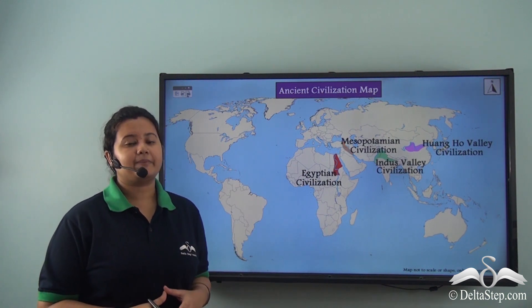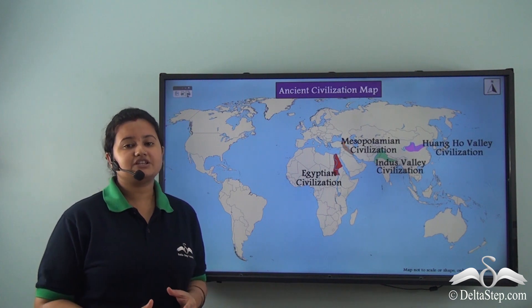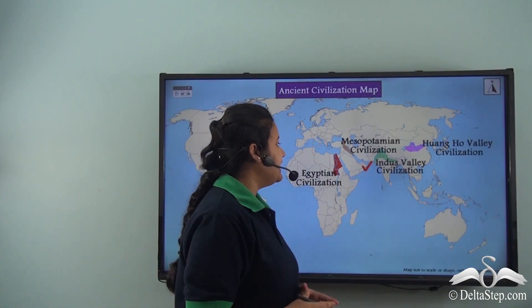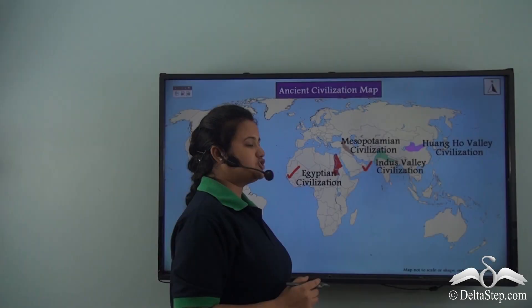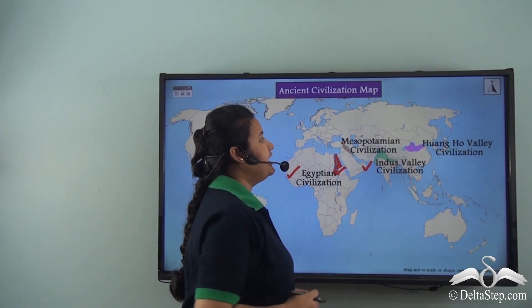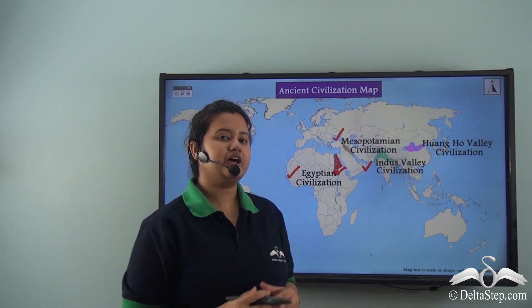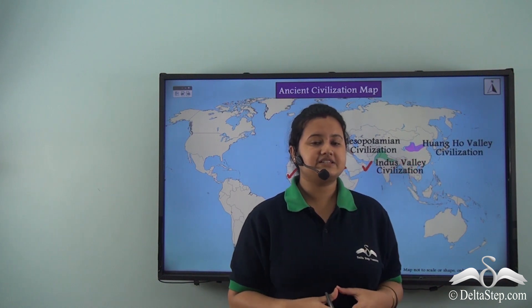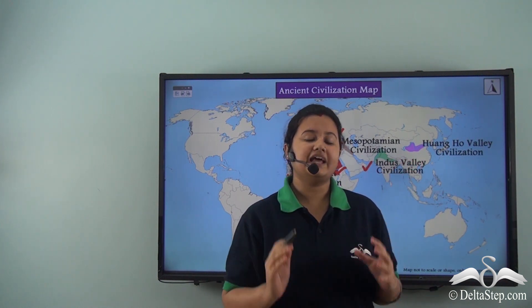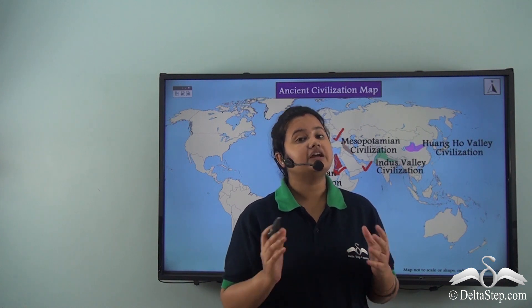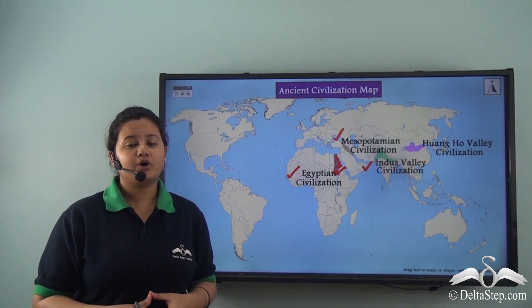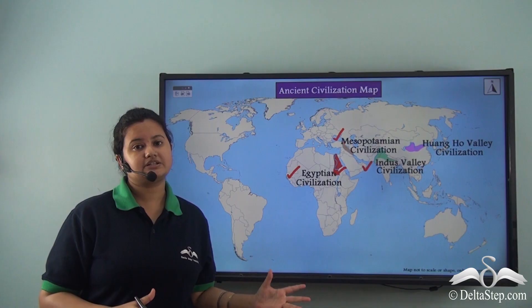Look at this map — it shows the ancient civilizations of the world. The Indus Valley civilization flourished on the banks of River Indus. The Egyptian civilization flourished on the banks of River Nile. The Mesopotamian civilization flourished on the banks of River Tigris. And the Huanghu civilization, an ancient Chinese civilization, developed on the fertile plains of the Yellow River. From this map, we can conclude that plains have been very important to human beings since prehistoric times.